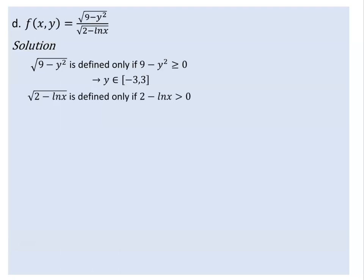The value of x: the expression 2 minus x must be greater than 0. This means 2 minus x is greater than zero. We have a change giving minus x, which leads to x less than 2.